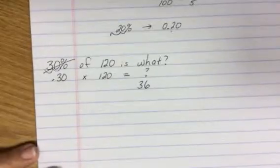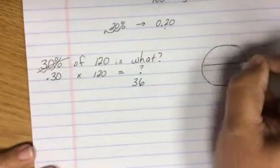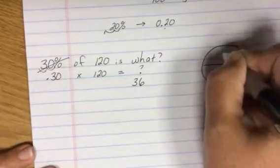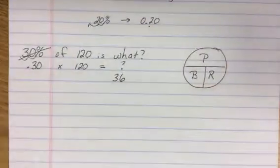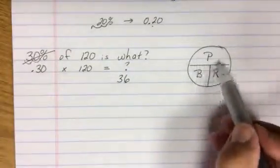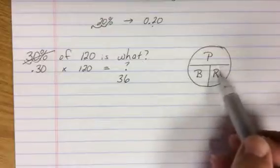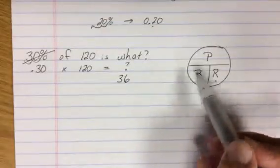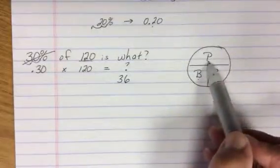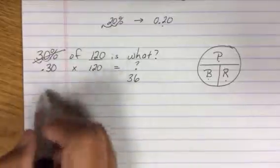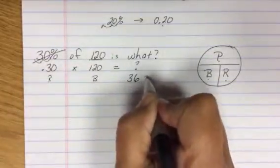Now remember, I said I could attack this more than one way. I also have what is known as my PBR, where P is my partial, B is the base, and R is the rate. The rate is the percentage, B is what I am taking the percentage of, and P is the partial. Looking at this problem, there is my R, this is my B, and this is my P.